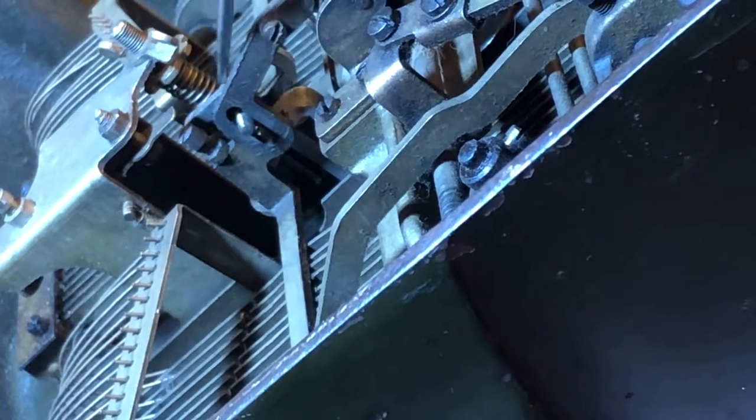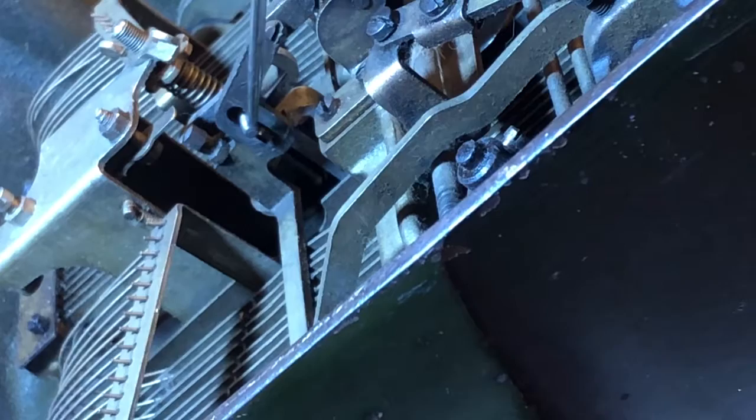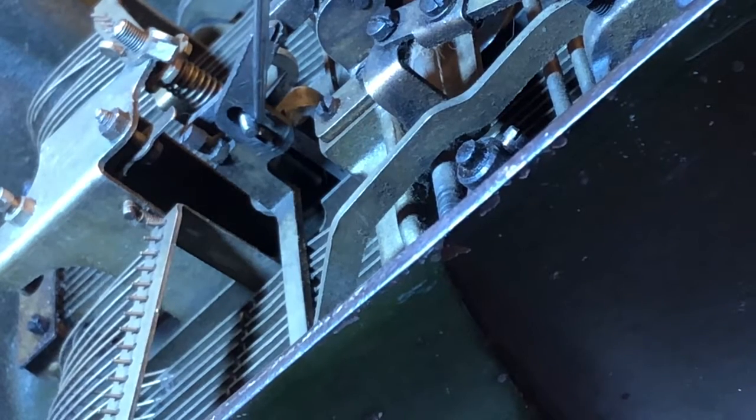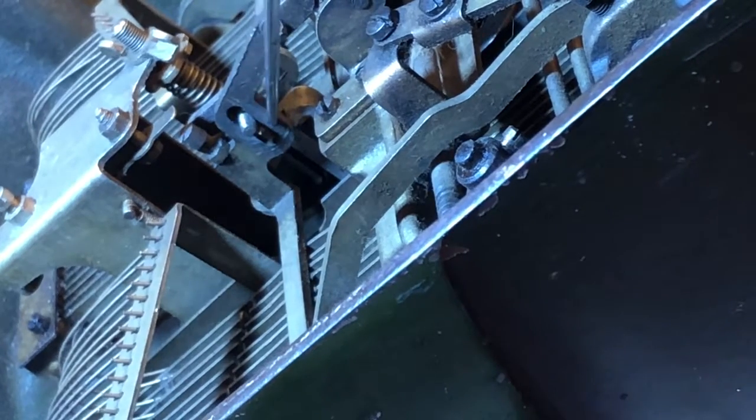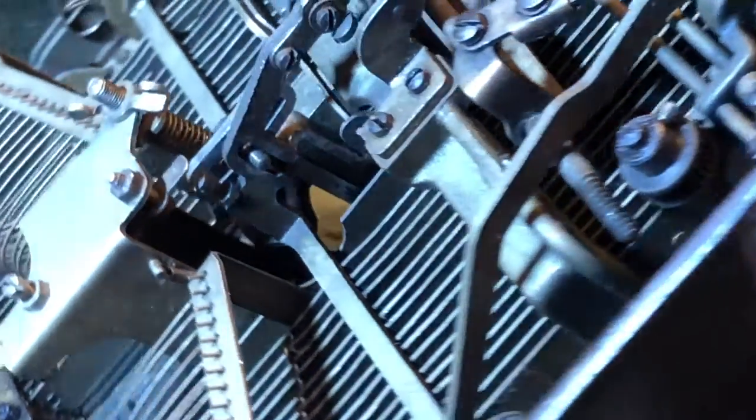This goes all the way down, it sits right about in the middle. So when I tighten this down, this is going to be the main adjustment for that ribbon vibrator to go all the way forward, all the way back. And so I'll probably have to mess with this a little bit on height. So I will tighten this up.